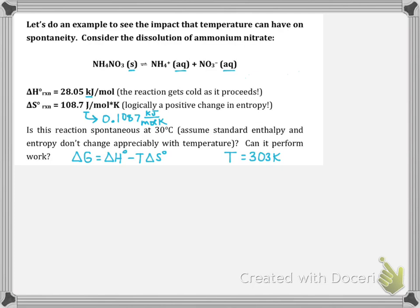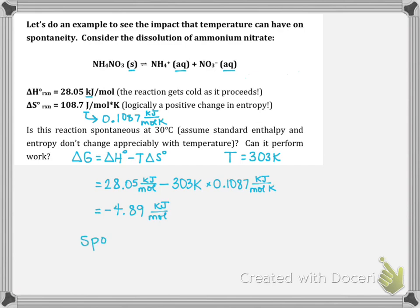To solve this, we plug in the delta H value, our temperature of 303 kelvin, and our delta S value in the correct units into the equation delta G equals delta H minus T delta S. The value we get is negative 4.89 kilojoules per mole. That means the reaction can do 4.89 kilojoules per mole of work, and because delta G is negative, the reaction is spontaneous at 30 degrees Celsius.